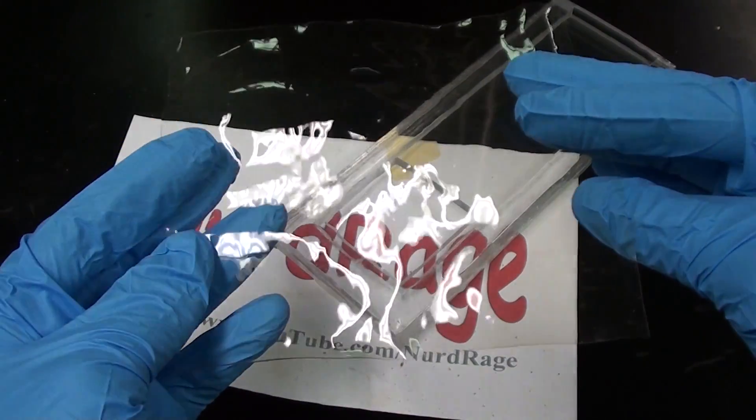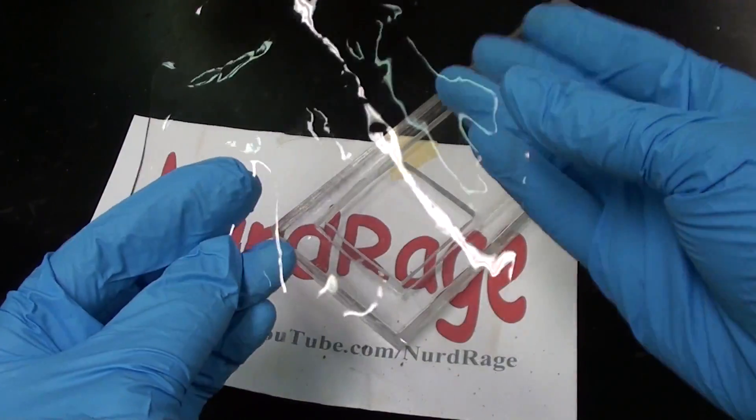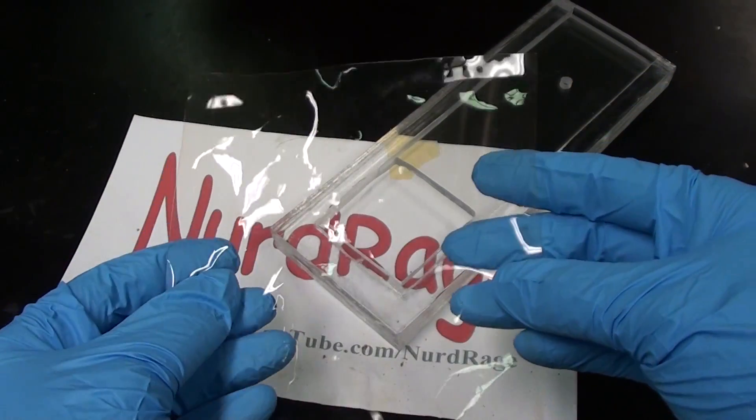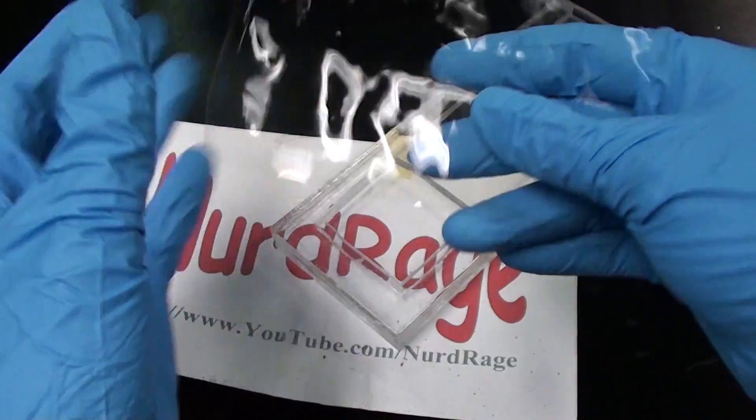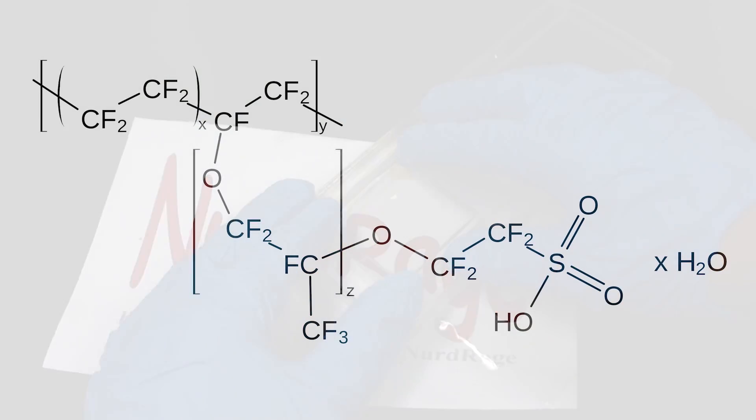So why is this membrane so coveted and special that the small sheet costs a hundred dollars? It actually has a few important features. As said before, it's a plastic polymer. But instead of being made of hydrocarbons, the backbone consists primarily of fluorocarbons similar to Teflon. This makes it extremely chemically resistant and can directly survive harsh electro-generated species like persulfates, hypochlorites and peroxides.